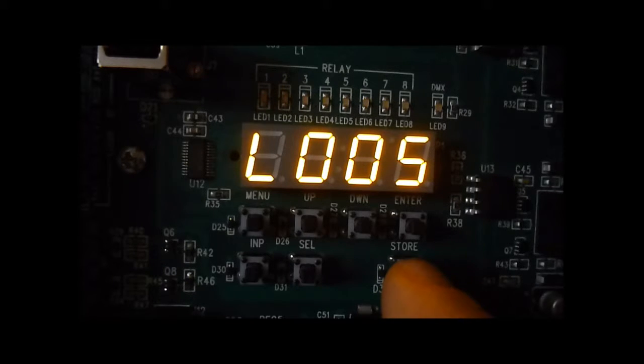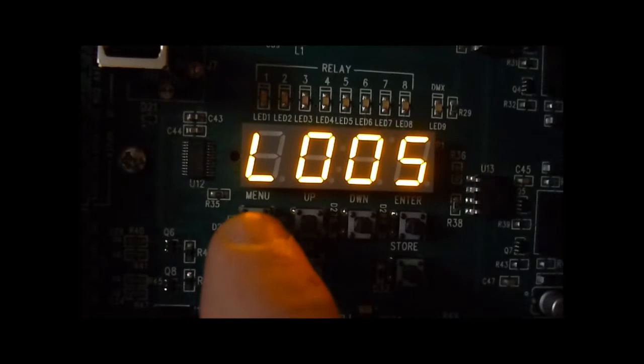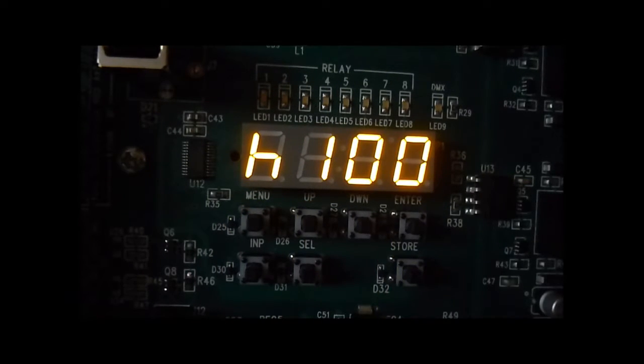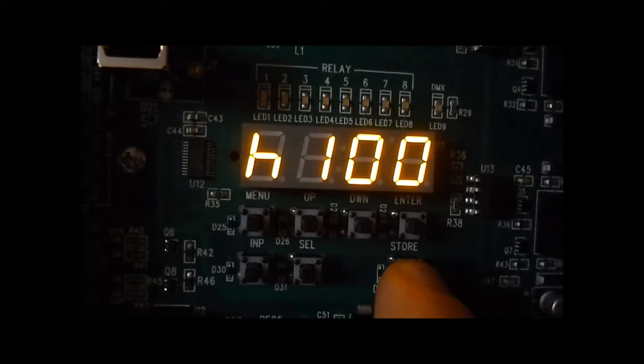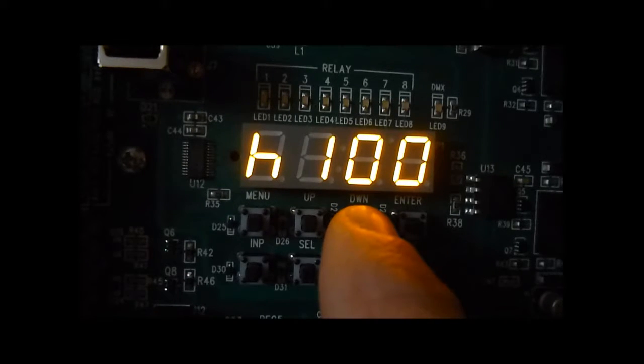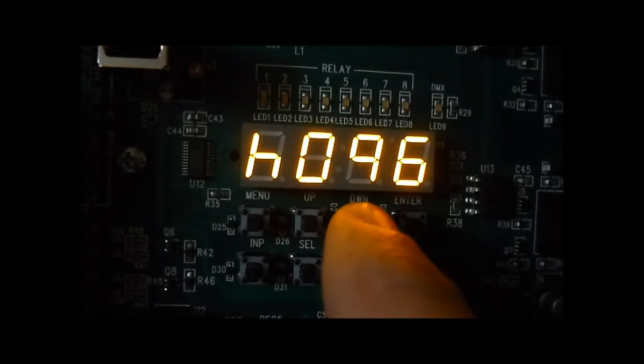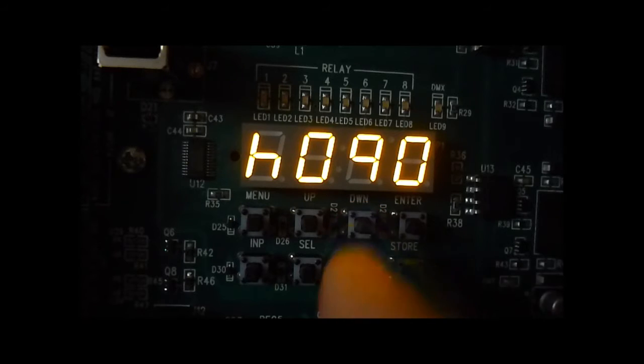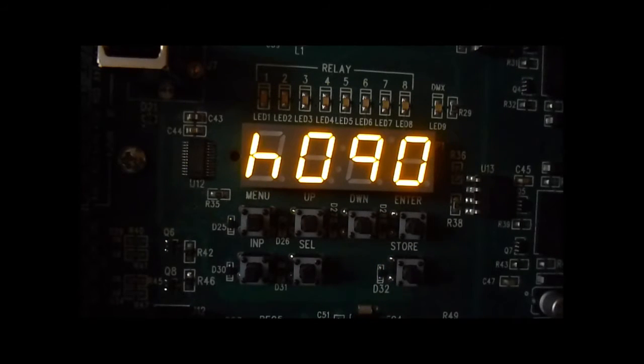Press store, back out, and select the high trim. This becomes the maximum value on the range from low trim to high trim. This typically defaults to 100%, but if you want to reduce the maximum value on a 0 to 10 volt dimming output, you can pull that back, say to 90%, and then just press store.